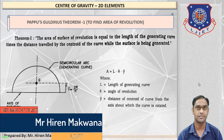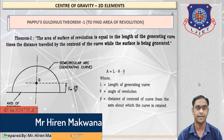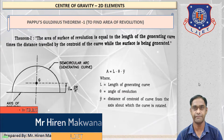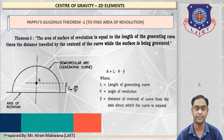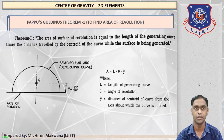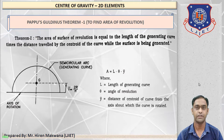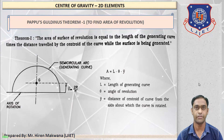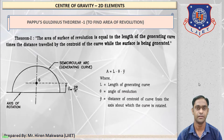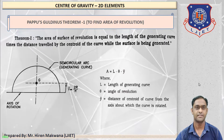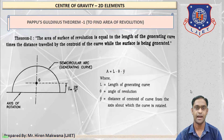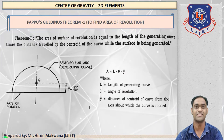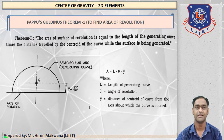Today we are going to discuss a new topic: the Pappus-Guldinus Theorem 1 and Theorem 2. Theorem 1 is used to find the area of revolution. Let us discuss how the area of revolution works.